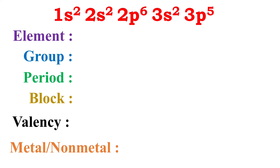We have the electronic configuration and these questions are given. With the help of this electronic configuration, how can we identify all these things? The numbers in the superscript we have to count them: 2 plus 2, 4 plus 6, 10 plus 2, 12 plus 5 = 17.